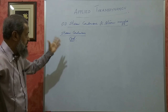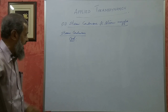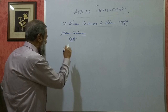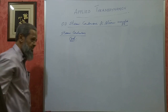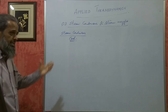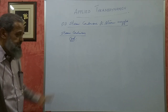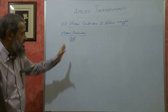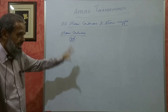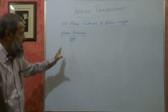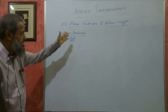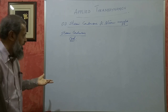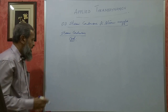In steam plants there are 2 types: condensing type and non-condensing type. Condensing type plant means condensers are used in it. Non-condensing means there is no condenser used in it.